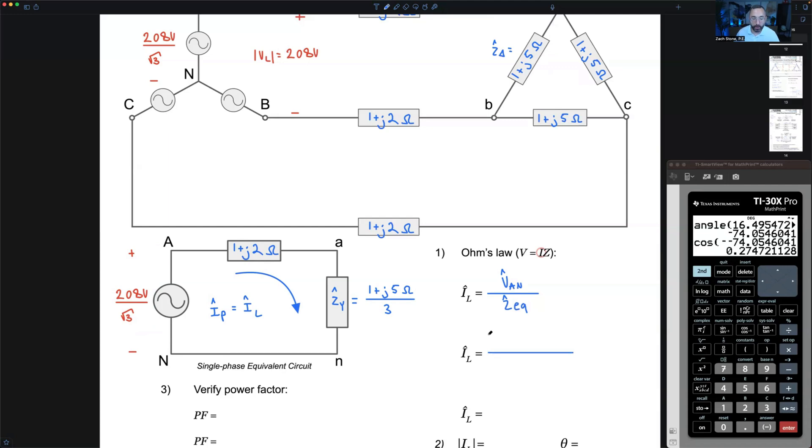Let's plug in some numbers. We still have 208 volts divided by the square root of 3. Dividing by the equivalent impedance, I still have two impedances in series so I can sum them up. There's no change to the line impedance, 1 plus J2 ohms, but now we've got the Y equivalent of the delta. So I've got 1 plus J5 ohms, that's our delta load, and we divide it by 3 to get the Y equivalent impedance.